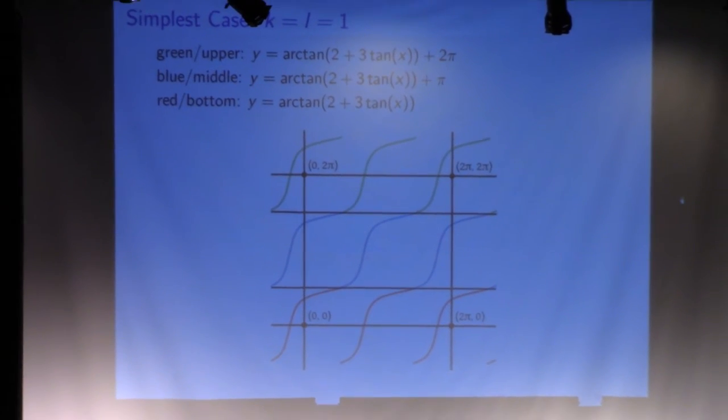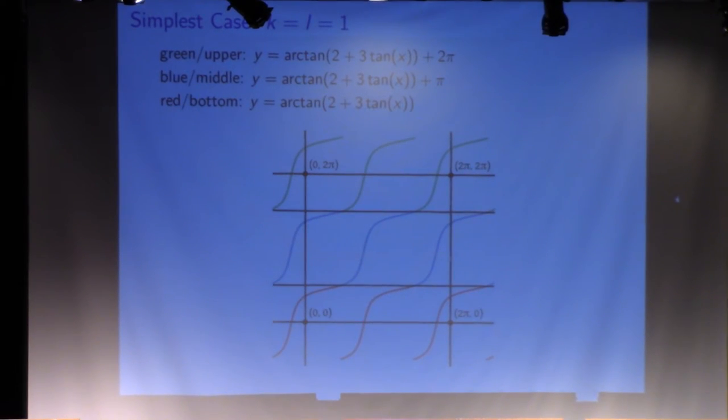This is a nodal domain for fixed values of s and t. We start off with these nodal lines, the red curves, and we shift them up pi and to pi to obtain all the nodal lines on the graph.